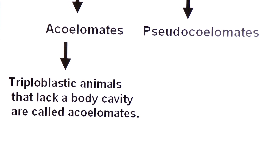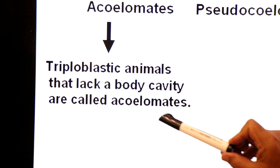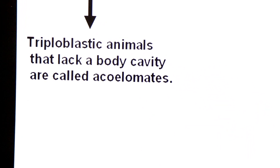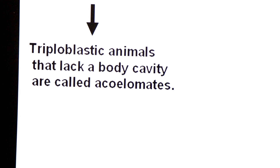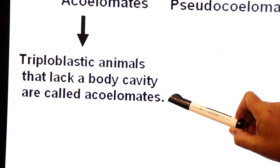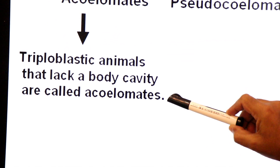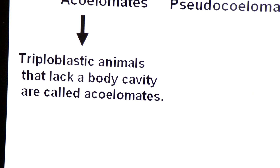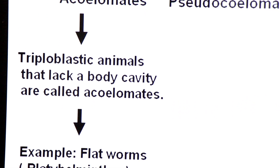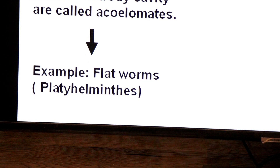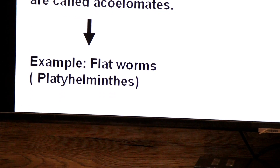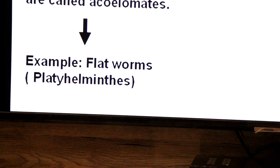Acoelomates: 'A' means without and 'coelom' means body cavity. Triploblastic Animals that lack a body cavity are called Acoelomates. The phylum placed in this group is Platyhelminthes — flatworms are Acoelomates.